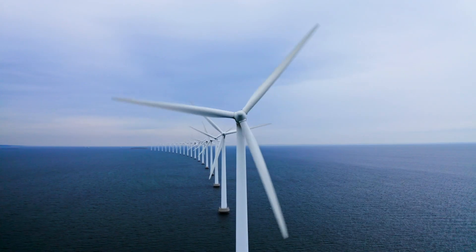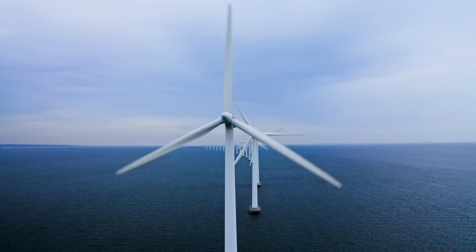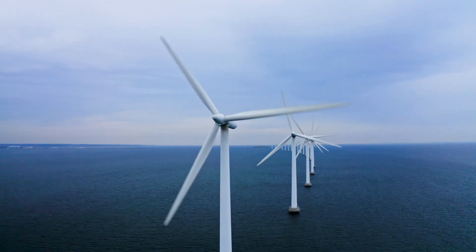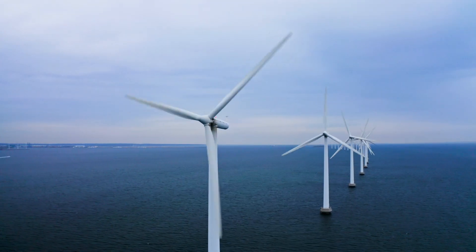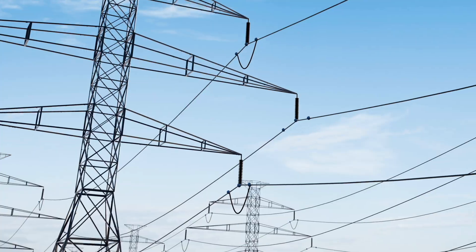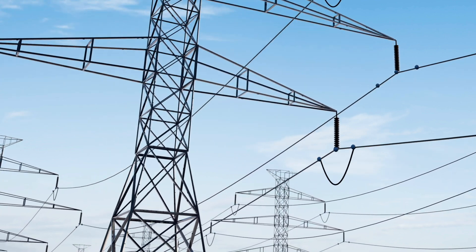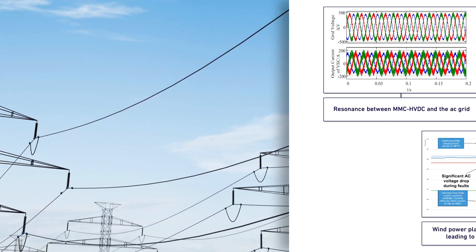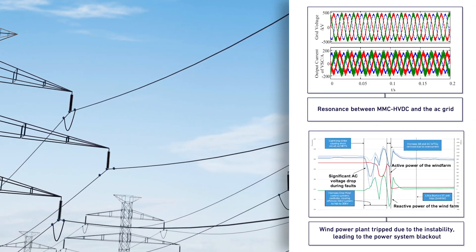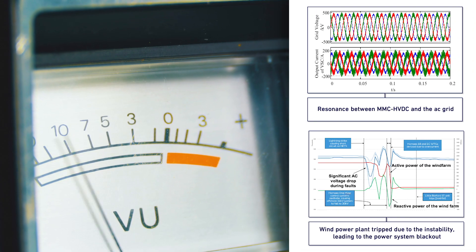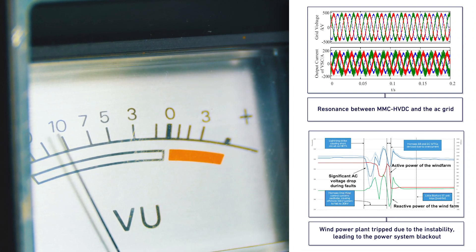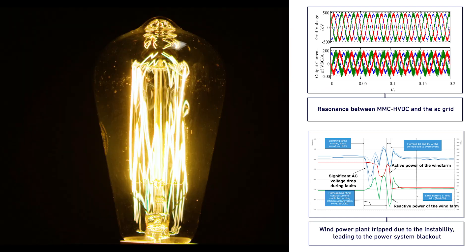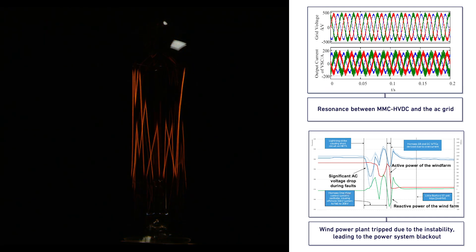Nowadays, power electronic-based electrical infrastructures, like offshore wind power plants or HVDC, have been increasingly used in the power system. However, power converters have a negative damping nature, which might destabilize the power system, leading to power system oscillation or even blackout.